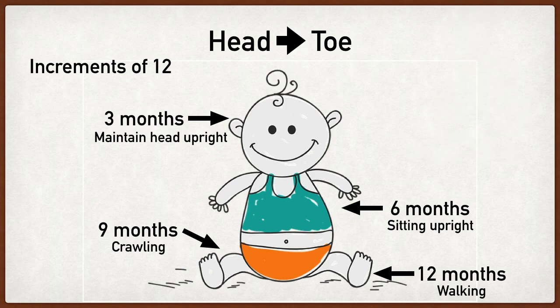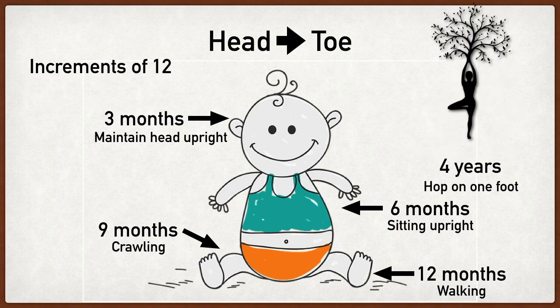The last major milestone we're going to talk about is four years old. This is when we're able to stand on one foot and even hop on one foot. The way I like to think about this is through this yoga pose because it's shaped like a number four, and this will help you remember that at four years old we can stand and hop on one foot.